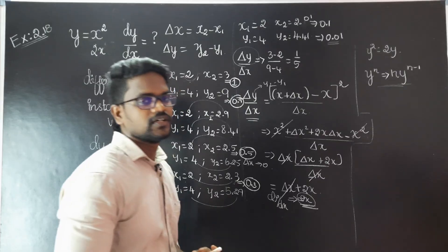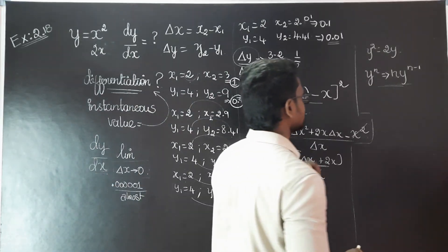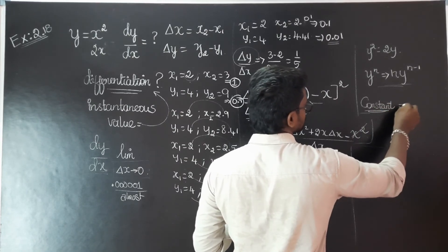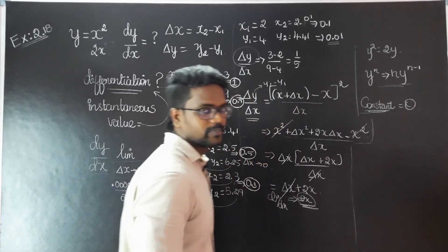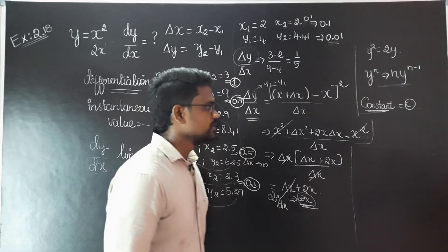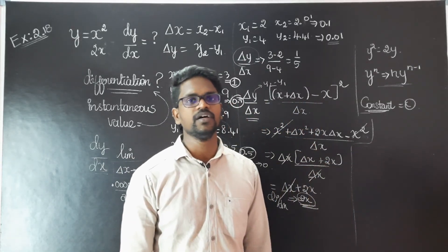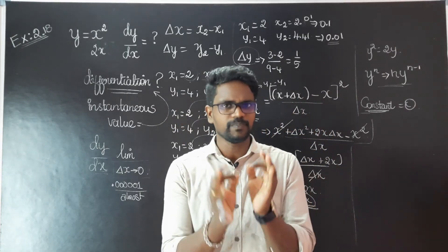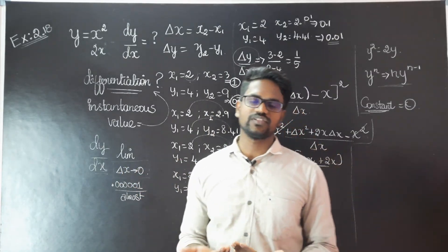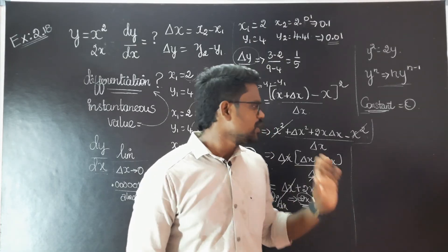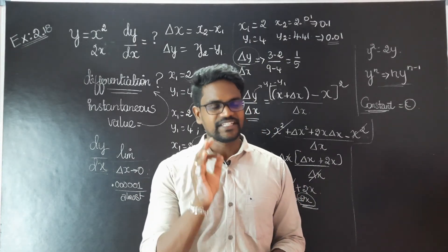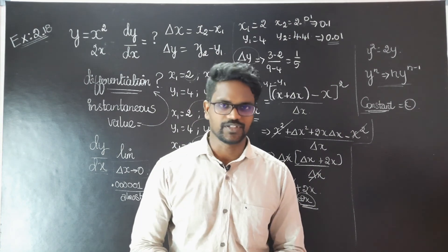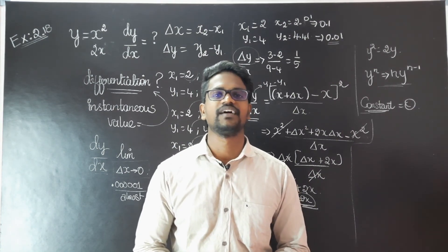We also have to say sin and cos. You must understand: if it is a constant like 2, 3, 4, 5, pi — if it is constant, you cannot differentiate, so that value will become 0. For sin, the derivative is cos. For cos, the derivative is minus sin. If you have any doubts, comment below. This is a simple concept — differentiation calculus. Thank you.